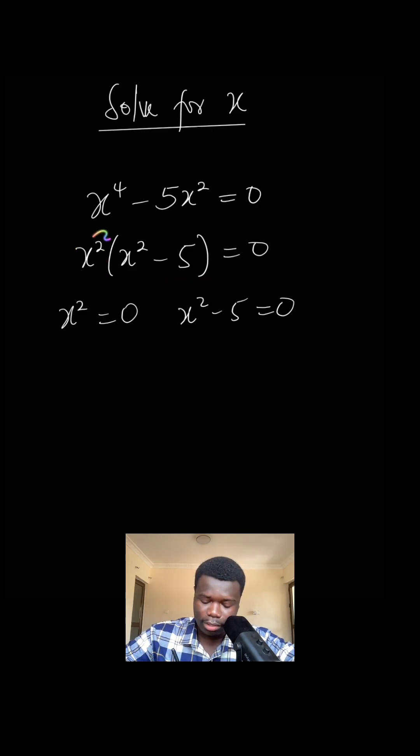So if this is zero, you have 0 times (x^2 - 5) = 0, or x^2 times 0. So you see that x^2 = 0 or x^2 - 5 = 0. That is why we do that.